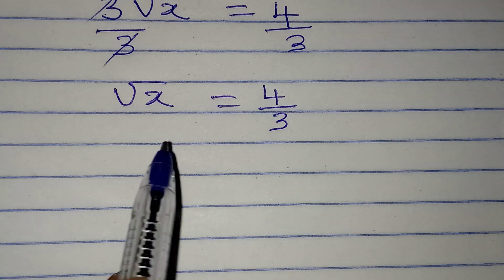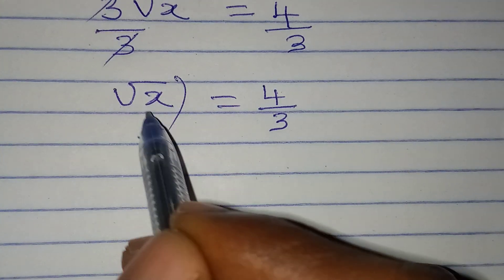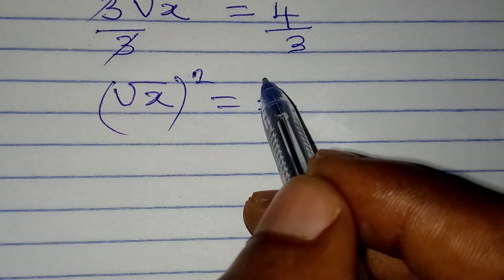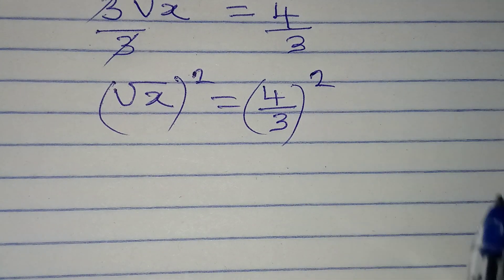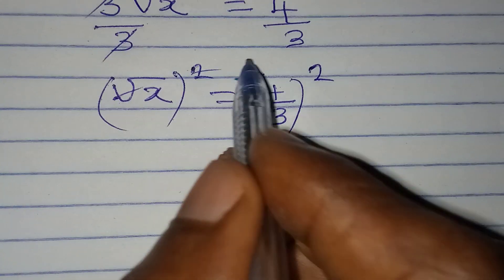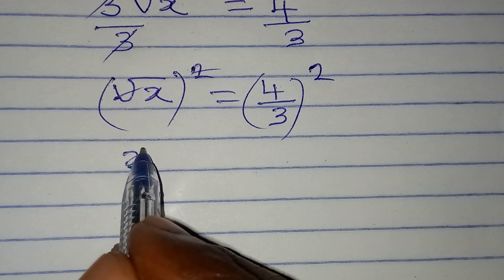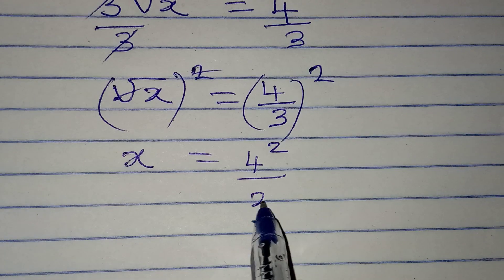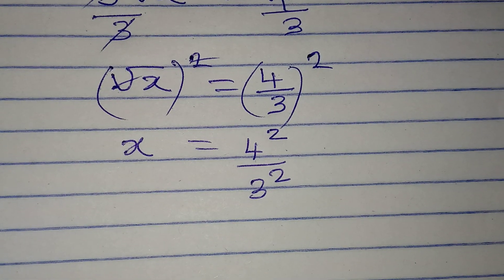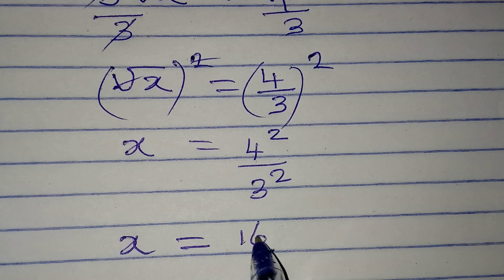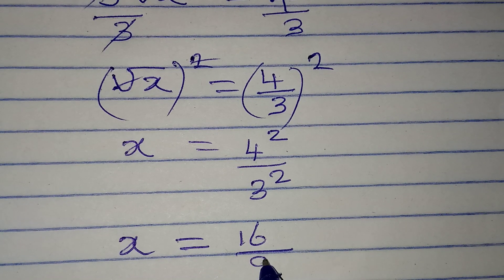And then from here, the next target is to remove the square root again, by squaring both sides. And then, we will also square this side. And now, the square root and the square will cancel, so that x will be equal to 4 squared over 3 squared. And then, this means that our x is equal to 16 all over 9.